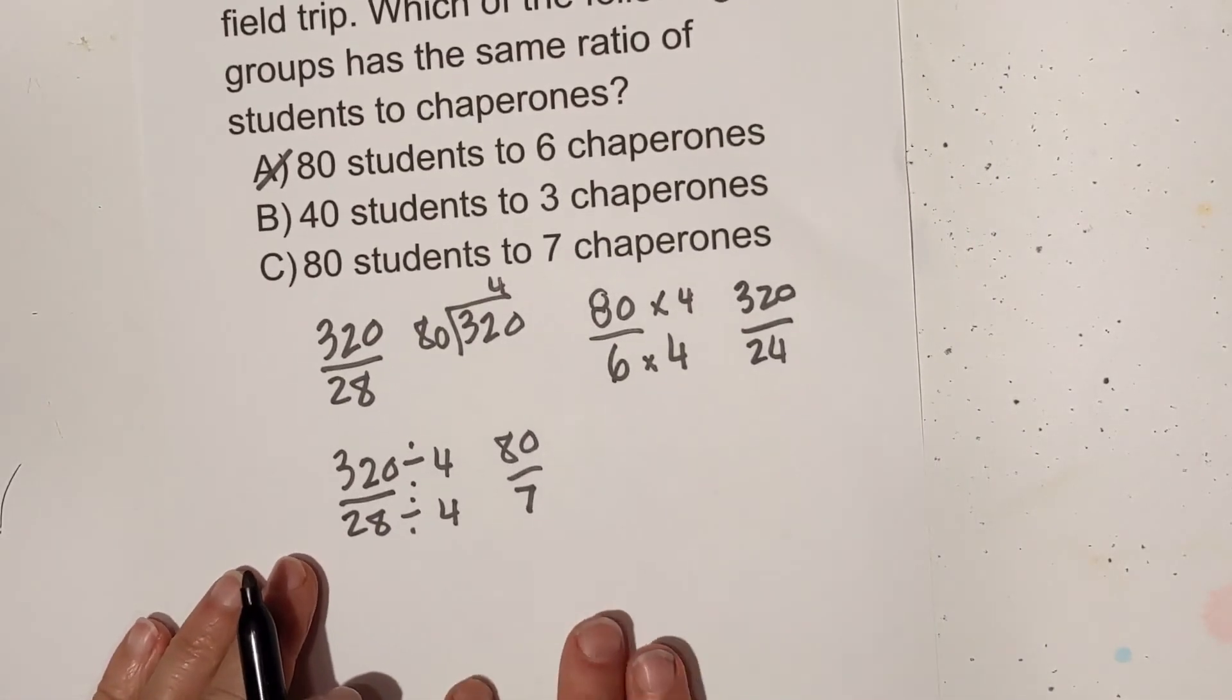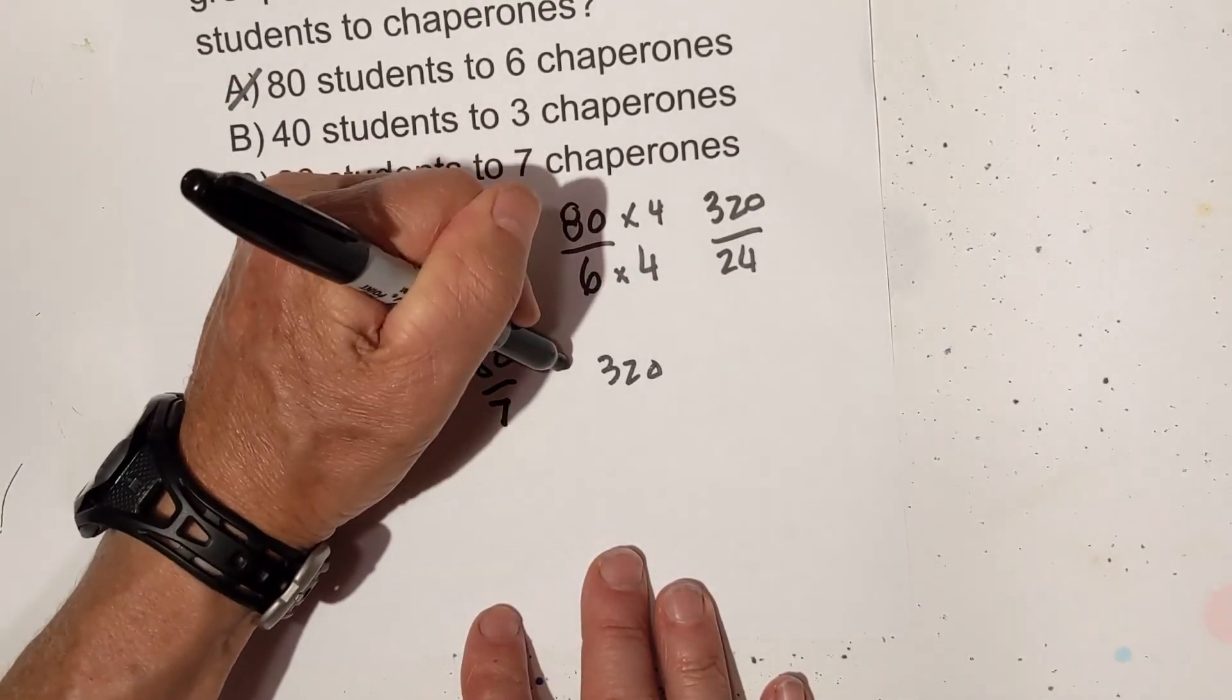So now let me speed this up just a little bit and try the other two answers. So now we have 320 divided by 40 which is 8. So now what I'm going to do is I'm going to take 40 times 8 and 3 times 8. Okay and when you multiply that that ends up being 320 over 24. So that can't be correct.